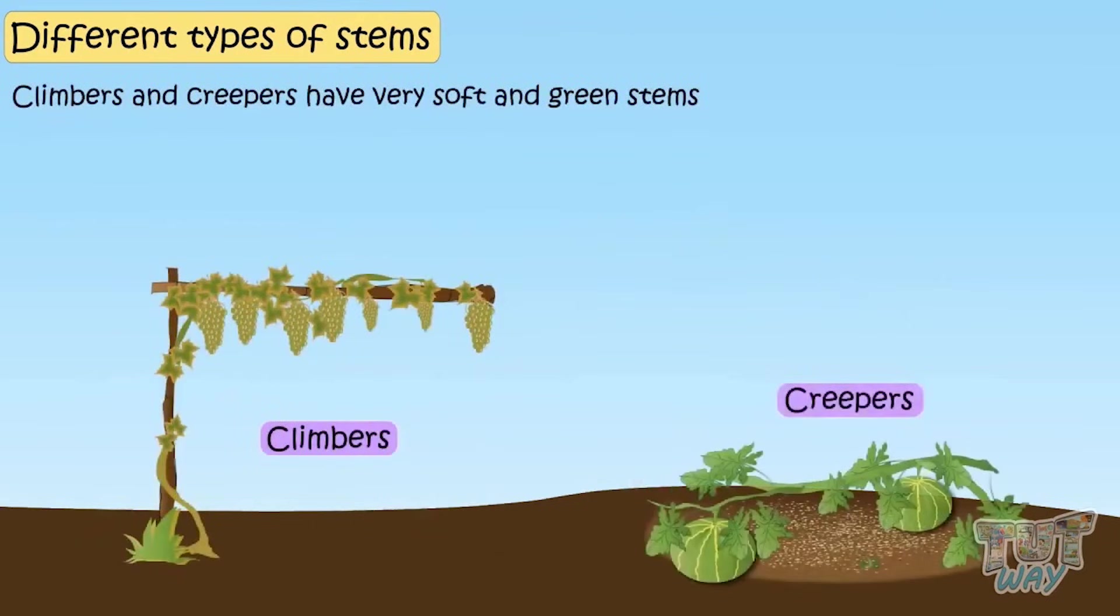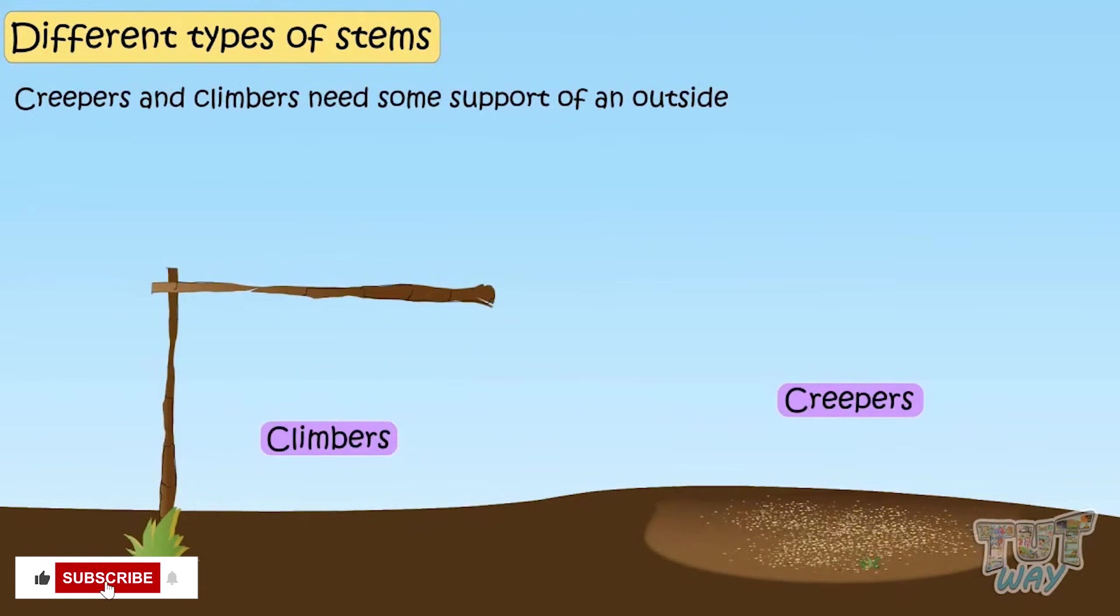Climbers and creepers have very soft and green stems that can't keep the plant upright. Creepers and climbers need some support of an outside object to climb up or crawl along.